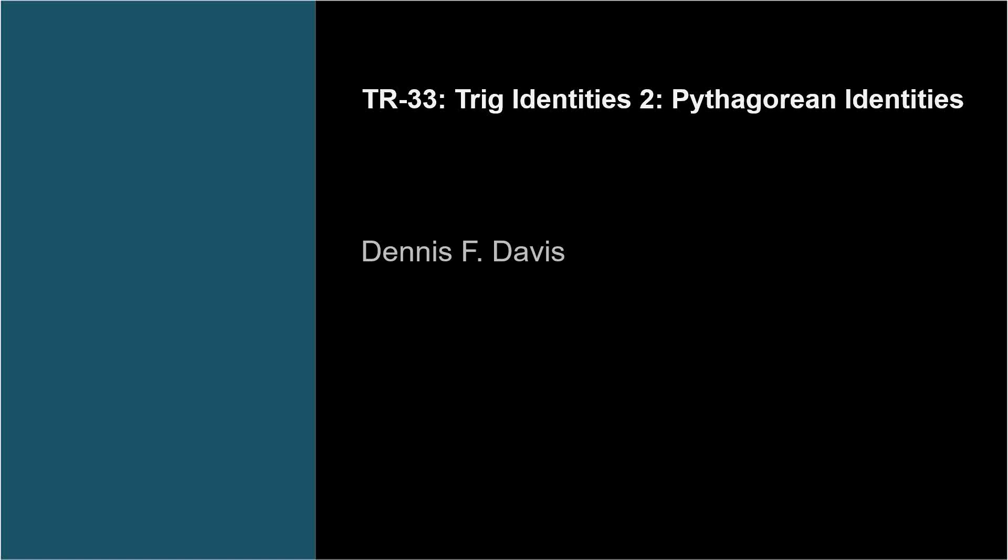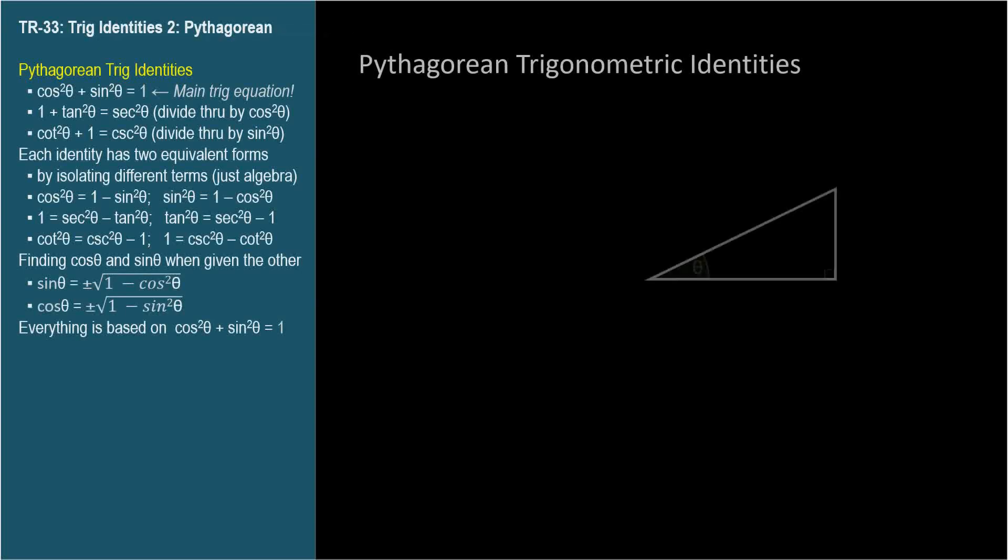The next trig identities we'll cover are called the Pythagorean identities. We learned the Pythagorean theorem in TR-09, and we mentioned this first Pythagorean identity back in TR-14.